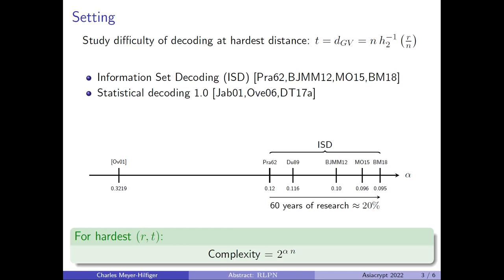Here, I have plotted the complexity exponent alpha of these algorithms at their hardest point. The complexity here is 2 to the power of alpha n. You can see that statistical decoding is highly competitive compared to the ISDs. After 60 years of research, the complexity exponents of the ISDs have only been improved by a factor of 20%. So this is really a hard problem.